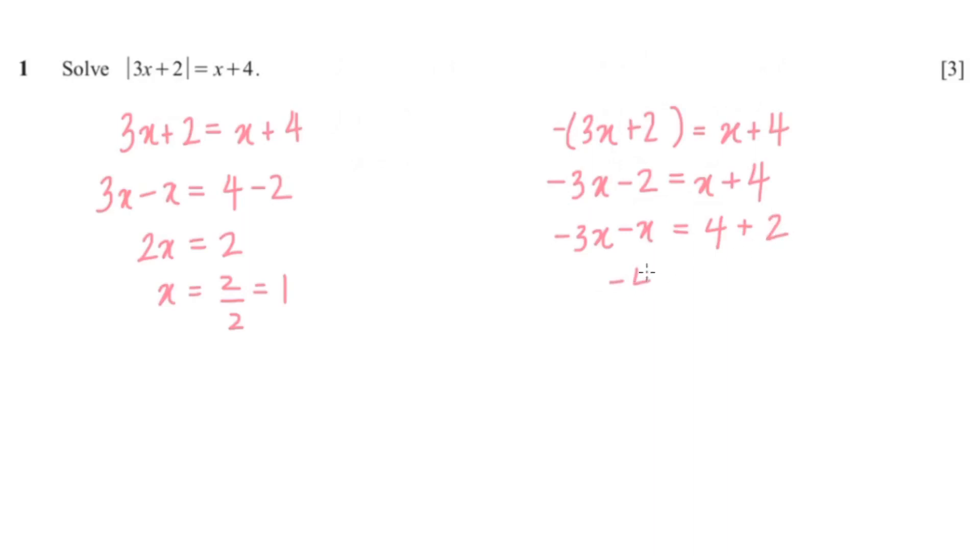And that gives me -4x equals 6, so x would be 6 over -4. And that would simplify to -3/2, or you could write it in decimal which is -1.5. And that's how you solve modulus questions.